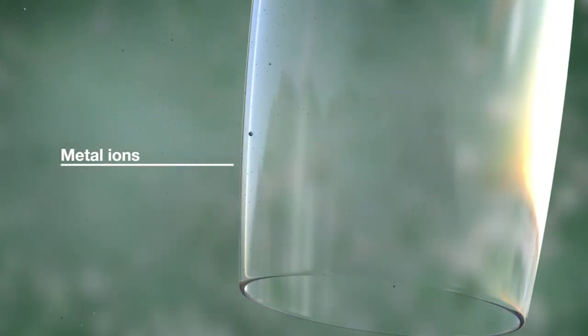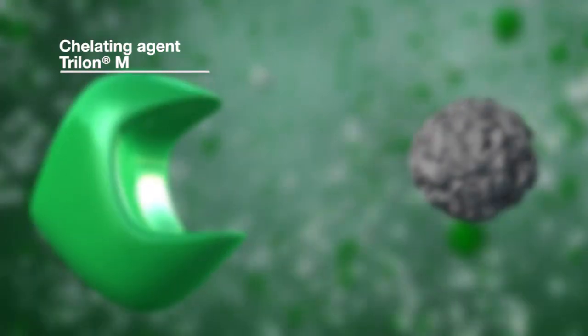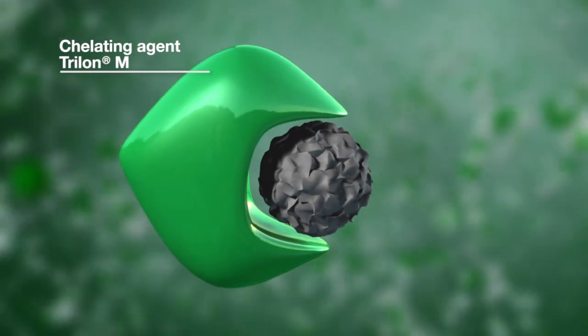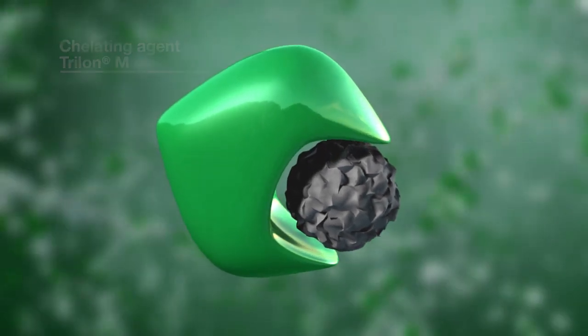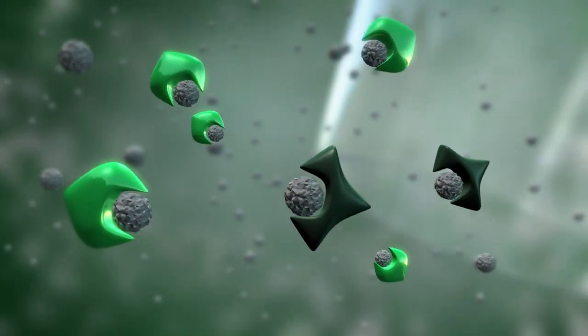The wash water contains metal ions that leave scale deposits on glassware and dishes. The so-called chelating agents like Trilon-M trap these troublesome ions and literally hold them in a tight grip. The otherwise hardly soluble lime scale then becomes water soluble.